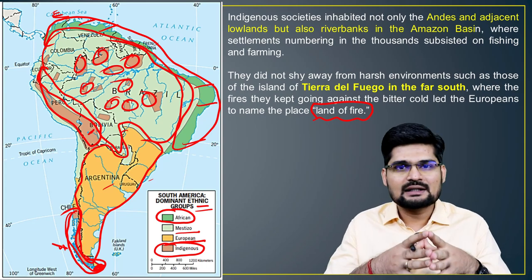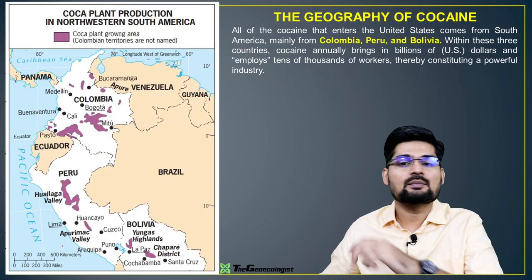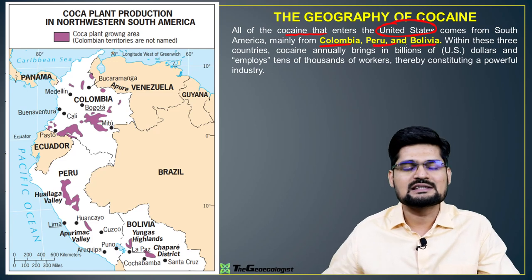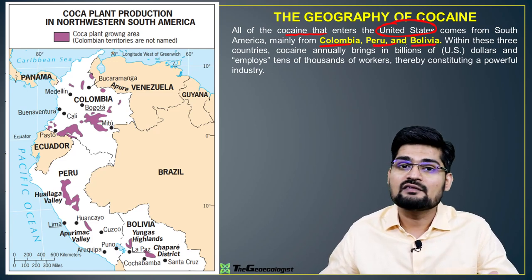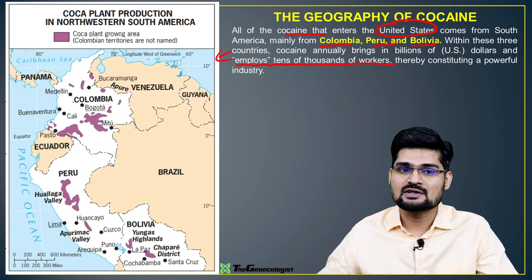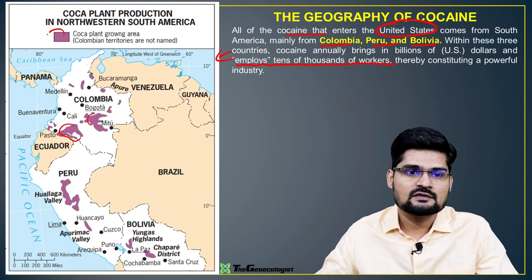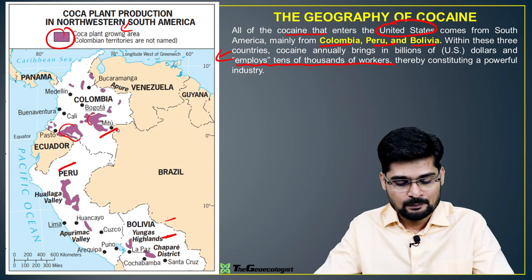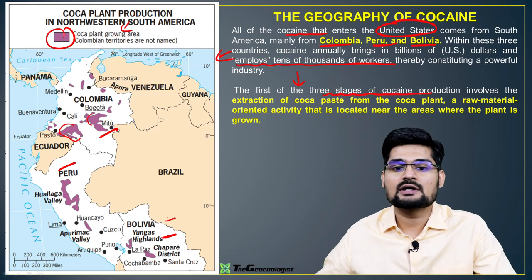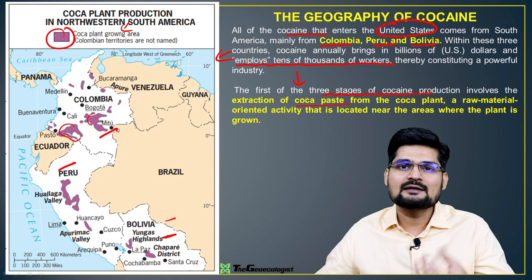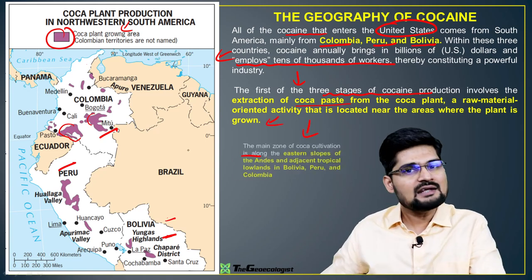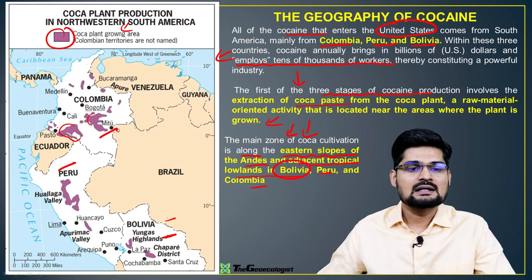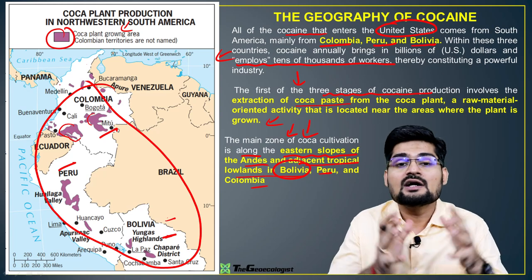South America is frequently in the news for the geography of cocaine. Of all the cocaine that enters the United States and other parts of the world, Colombia, Peru, and Bolivia are the three major producers, employing tens of thousands of workers. The three stages of cocaine production involve extraction of coca paste from the coca plant, raw material processing, then packaging and supplying. The main zone of coca cultivation is the eastern slope of the Andes and adjacent tropical lowlands of Bolivia, Peru, and Colombia.